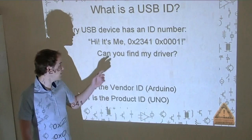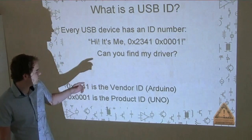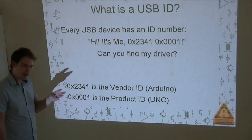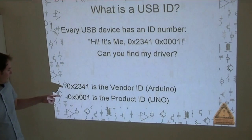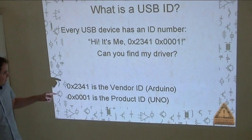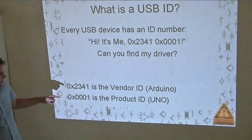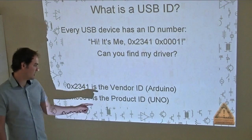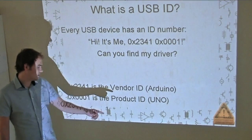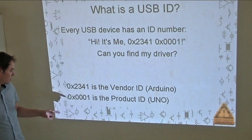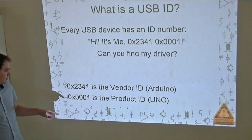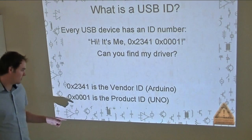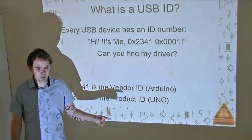That USB ID consists of two parts and it's four bytes long. The first part is two bytes, and that's the vendor ID — in this case we've got the ID of an Arduino. The second part, also two bytes, is the product ID. In this case we've got the Arduino Uno.